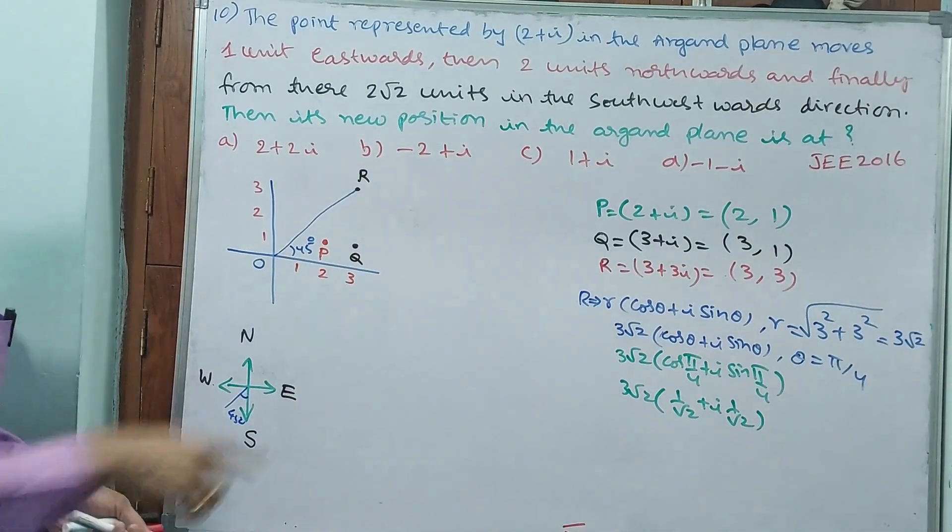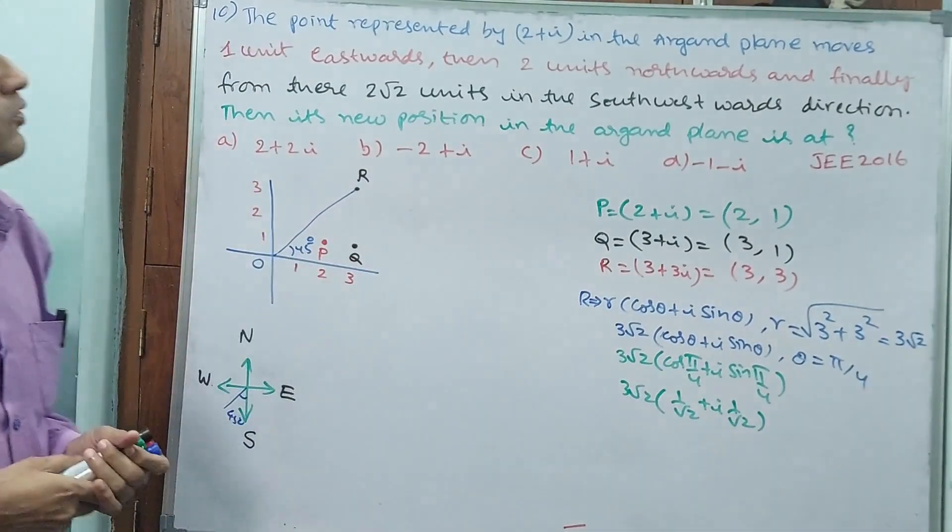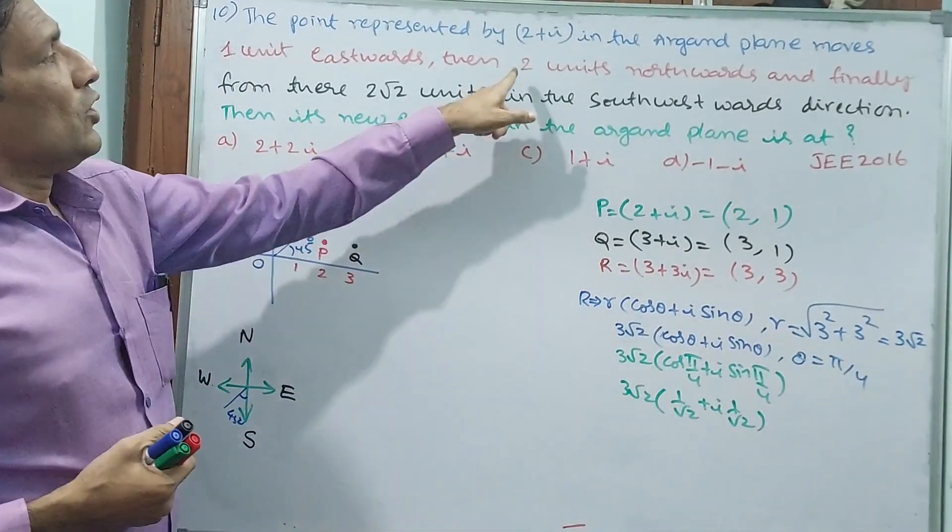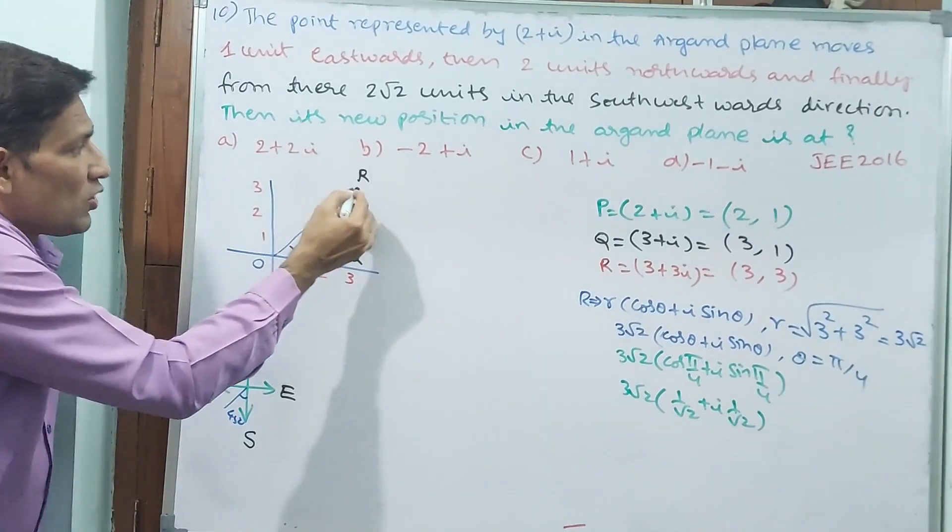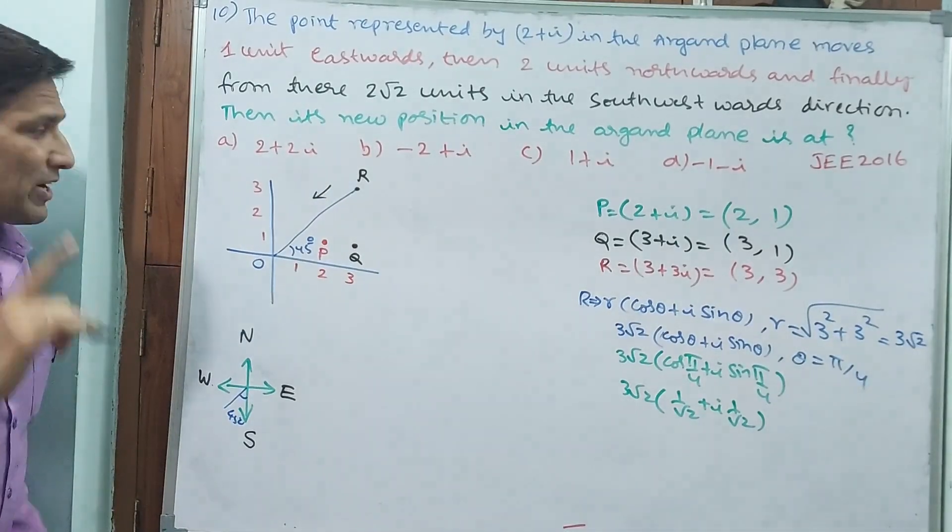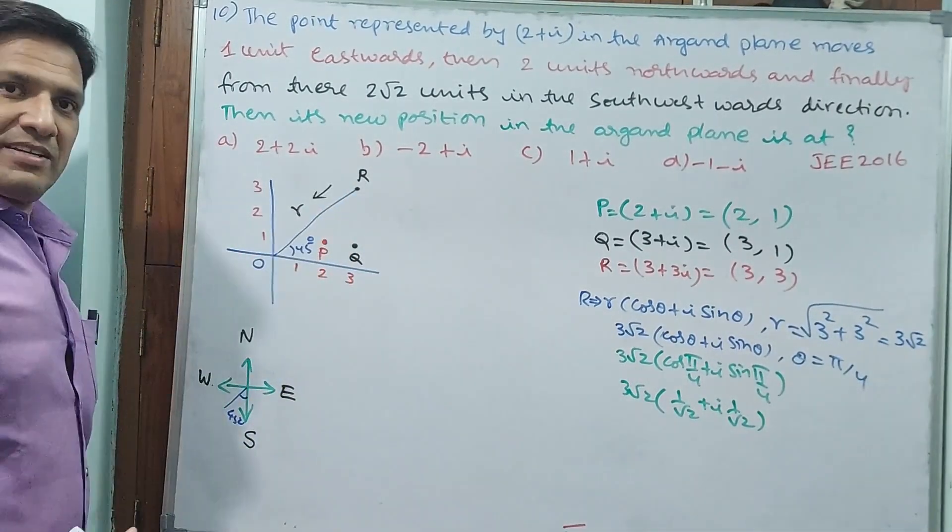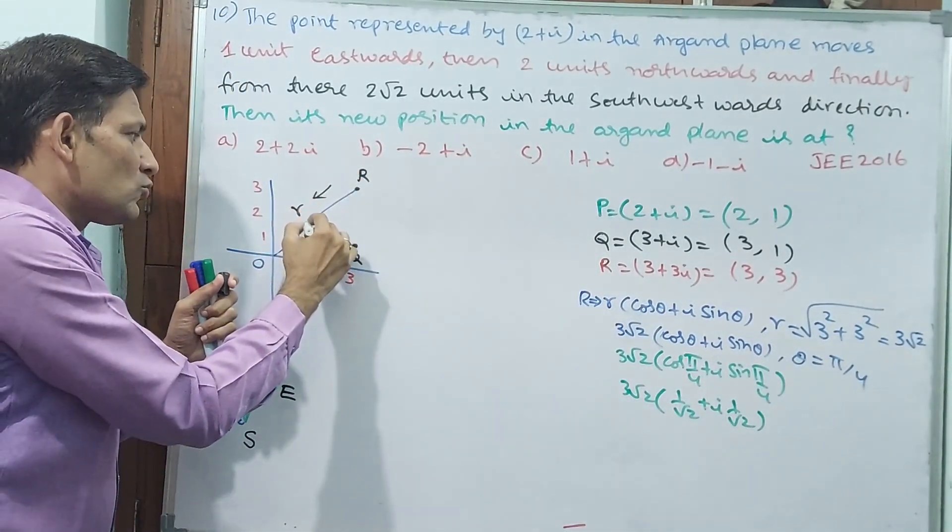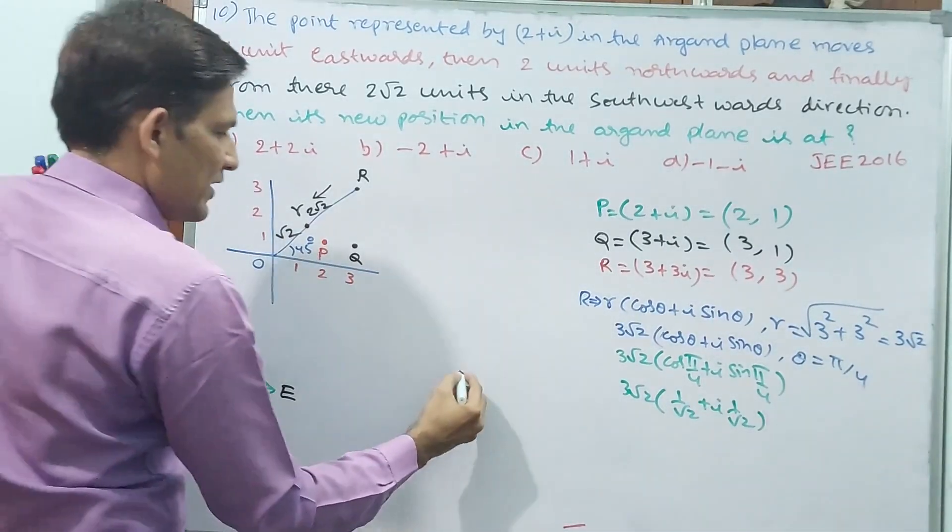Now go back again. You go back. Why? Because R you know got, r is 3 root 2. Now you tell me, 2 root 2 units in southwest direction again it has moved. Southwest means the same route, in this position only, in this direction only. But not 3 root 2. Why? Because here 3 root 2 are there. This is r, modulus, distance. 3 root 2 units already is there distance, but it has now only up to 2 root 2 only. But how much it will left? Root 2.